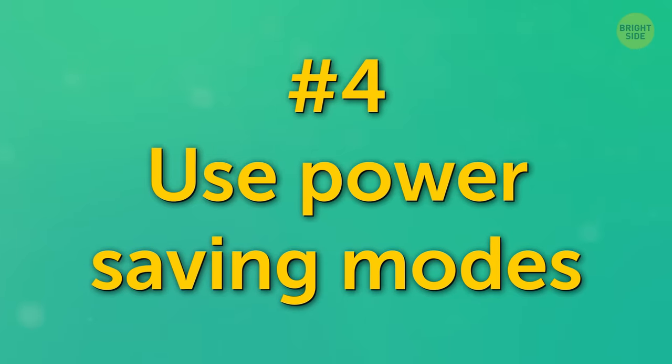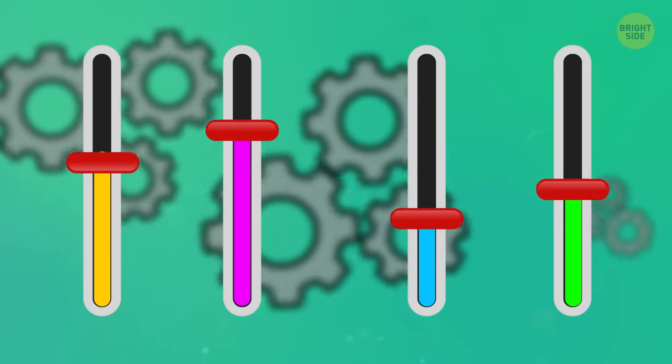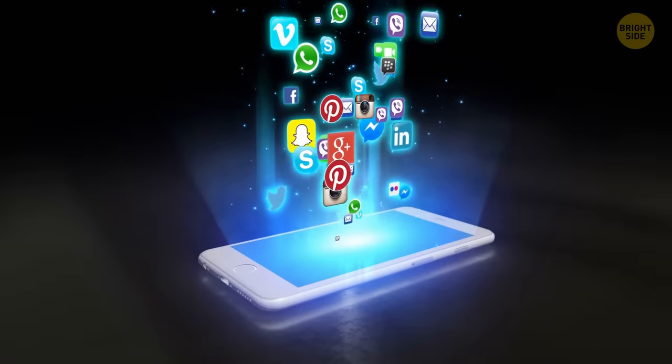Number 4. Use power-saving modes. Many modern phones come equipped with power-saving software to keep them on longer. These modes will automatically change a variety of settings, such as brightness and which background apps are running.